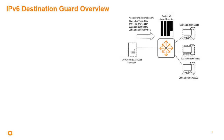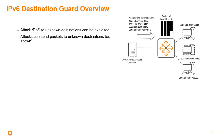Let's get an overview of what IPv6 Destination Guard is used to prevent. Attacks or denial of services to unknown destinations can be exploited in IPv6 networks. Attacks can send packets to unknown destinations — as shown in the diagram, the host on the left is sending packets to unknown destinations on this switch. This can cause a problem on the switch in terms of cache depletion.